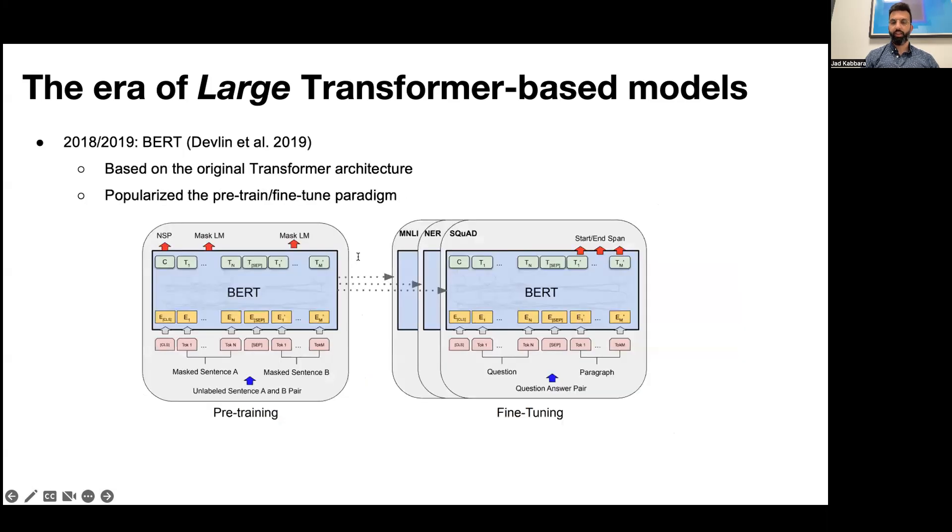The next big thing is going to be BERT, another transformer model also from Google, first introduced in late 2018. From an architectural point of view, the model is closely based on the original transformer model.